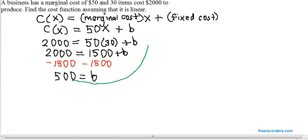And now, take that value of b, go back to our cost function, and plug it in. And our final answer is going to be the cost function c of x is equal to 50x plus the y-intercept we just found, which is 500.